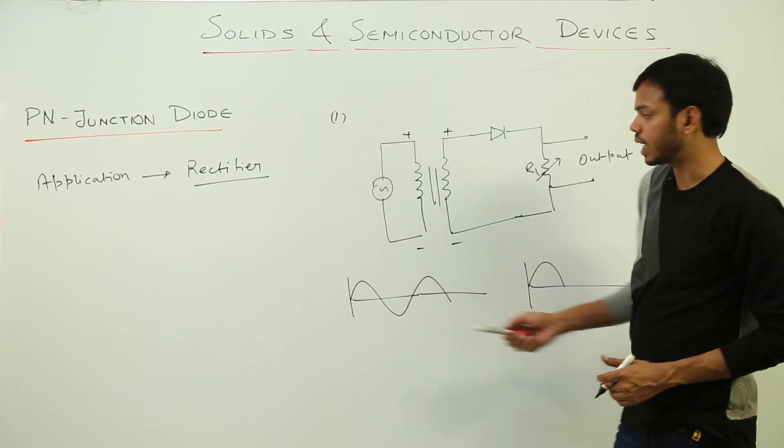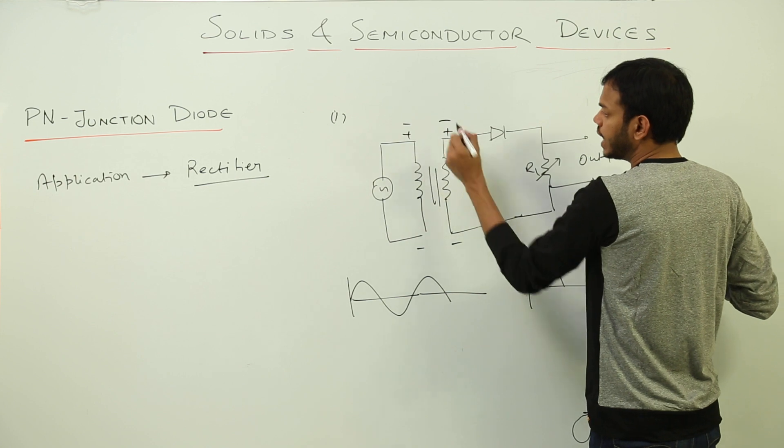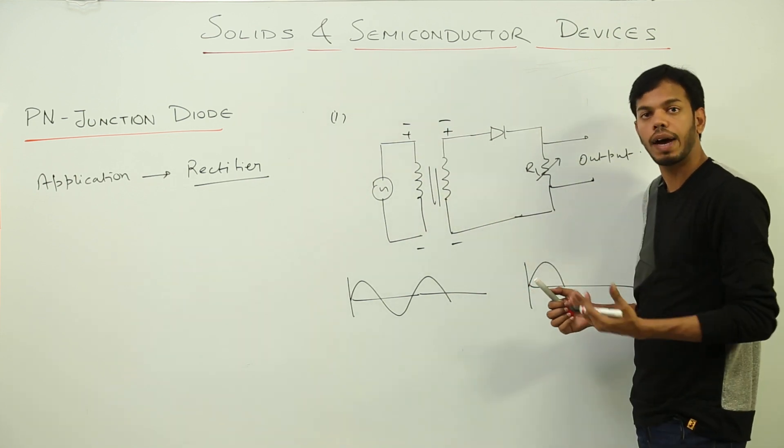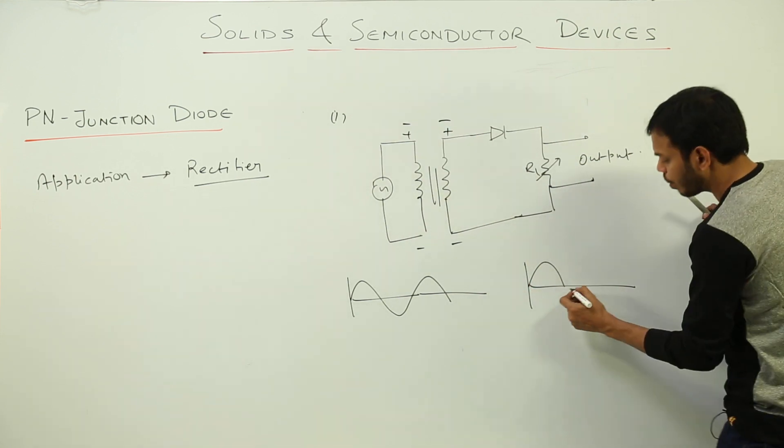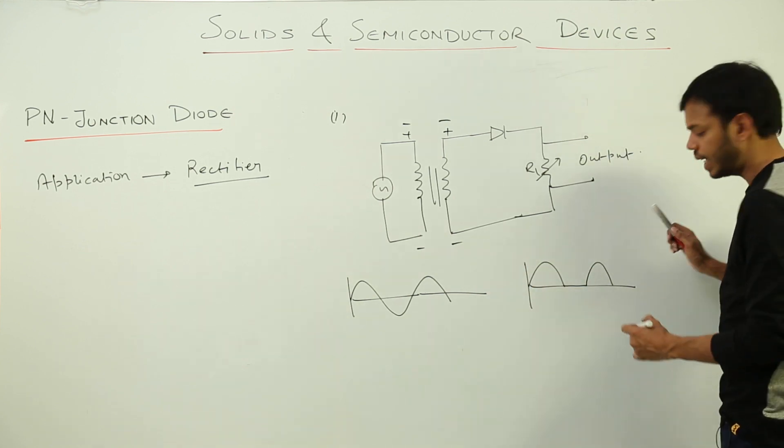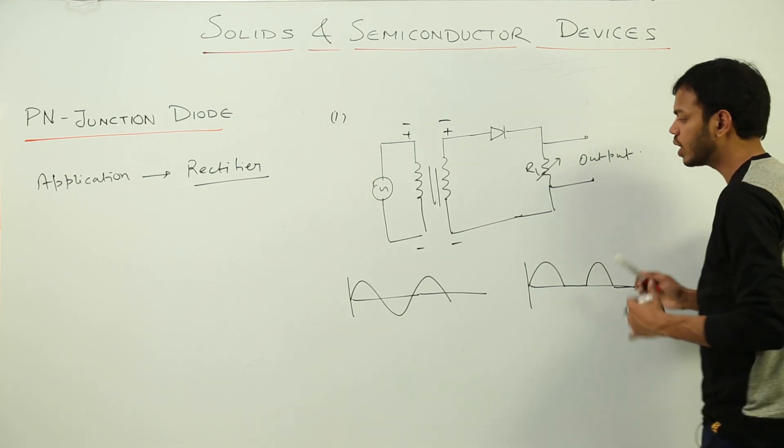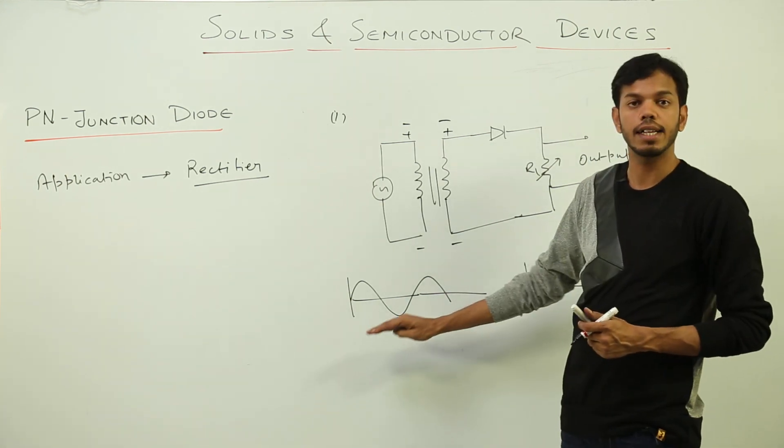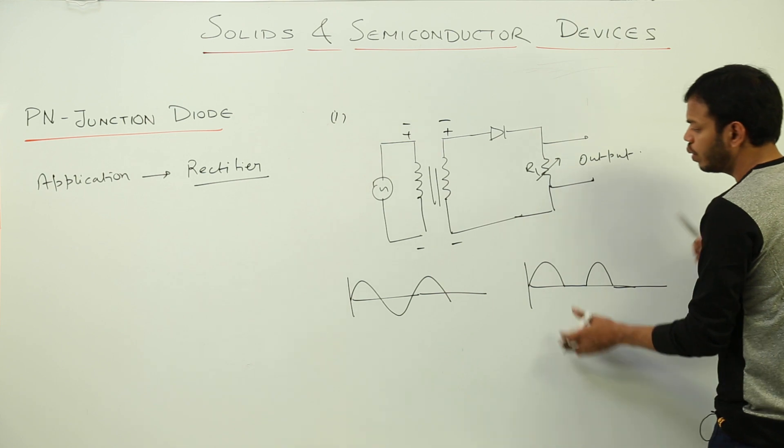When during negative half cycle this thing is negative, so diode goes in reverse bias state and it will not conduct. So I'm not going to get any current. During next positive half cycle it will be again forward bias state, and next no current.